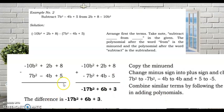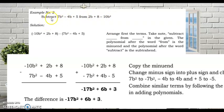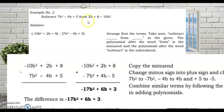In Example 2, we are going to subtract 7b² − 4b + 5 from 2b + 8 − 10b². Take note: the phrase 'subtract from' means that 2b + 8 − 10b² should be the minuend, and 7b² − 4b + 5 should be the subtrahend. It is very important to identify which is the minuend and which is the subtrahend.